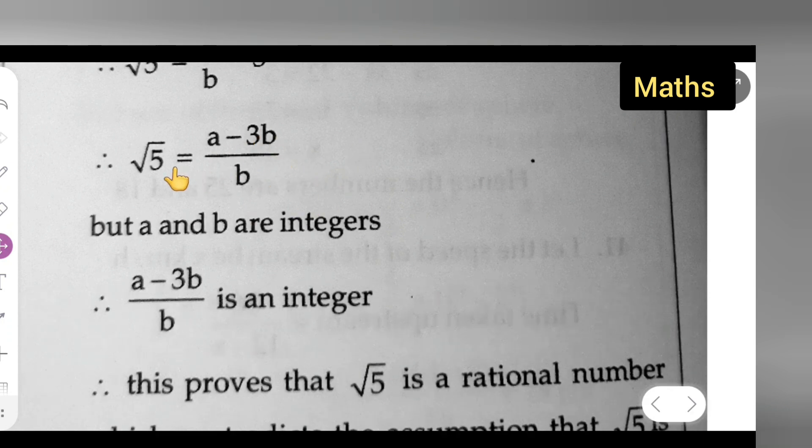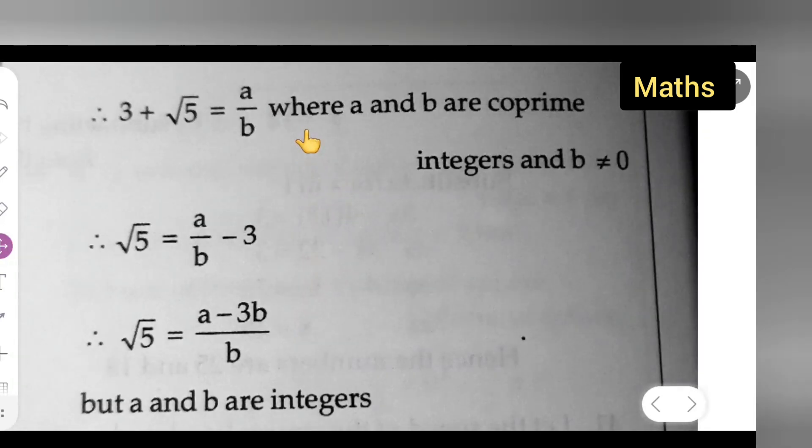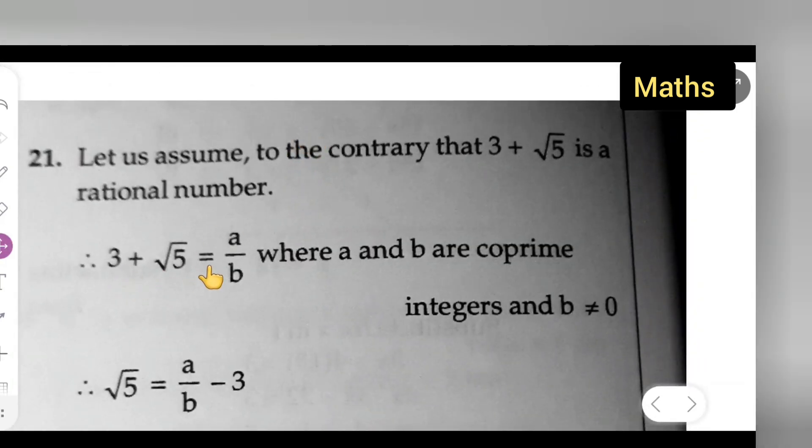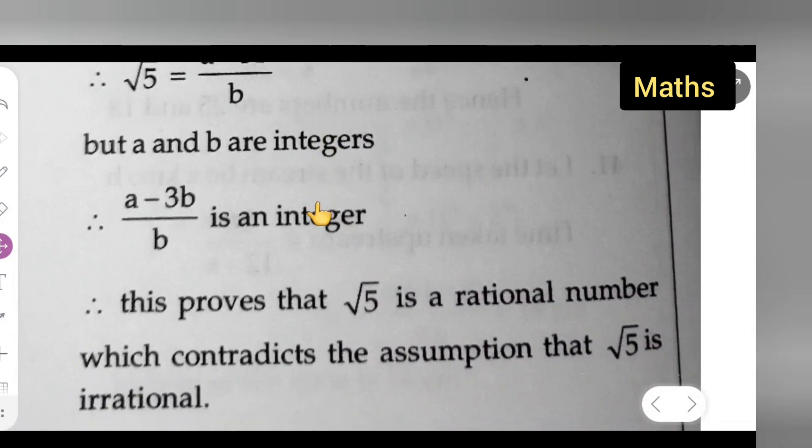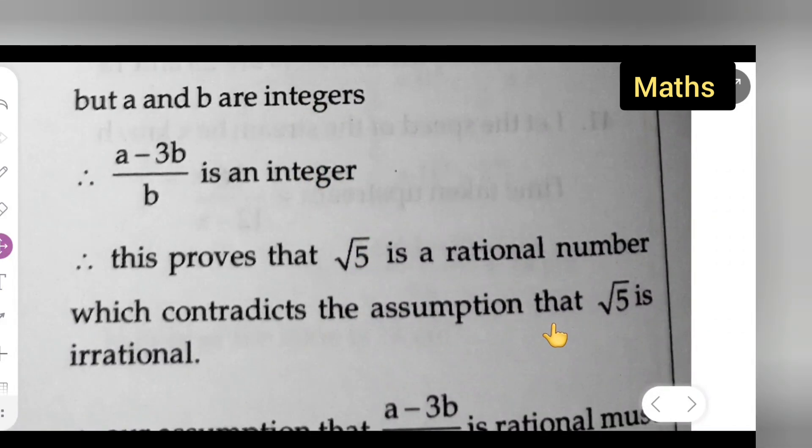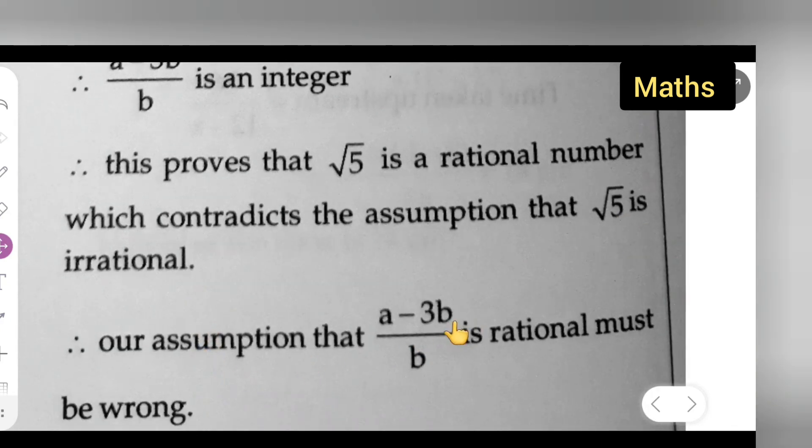So obviously, the assumption which we made that 3 plus root 5 is a rational number is wrong. So finally, it is contradicting that root 5 is irrational, so the assumption that a minus 3b upon b is rational must be wrong.